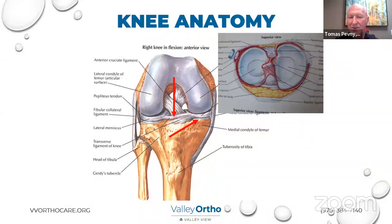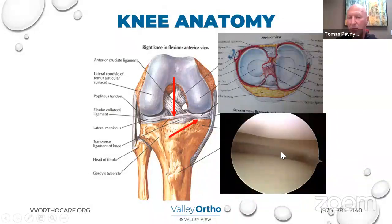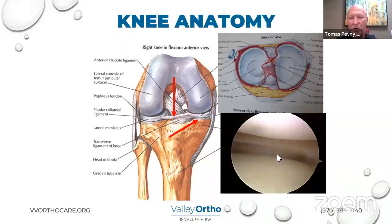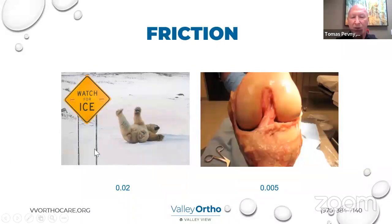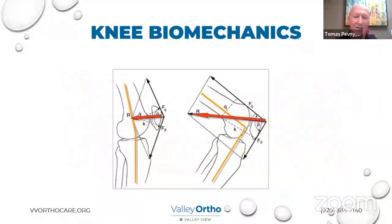Looking at this arthroscopically — inside the knee — this is what a normal meniscus and articular cartilage looks like: the femur cartilage, tibial cartilage below it, and the meniscus acting as that shock absorber. Now, the smooth cartilage on the end of the bone has what's called a coefficient of friction — a measure of efficiency as a bearing surface. Ice on ice has a coefficient of friction of 0.02. The cartilage on the end of our bones is 0.005 — even better than ice on ice as a bearing surface.